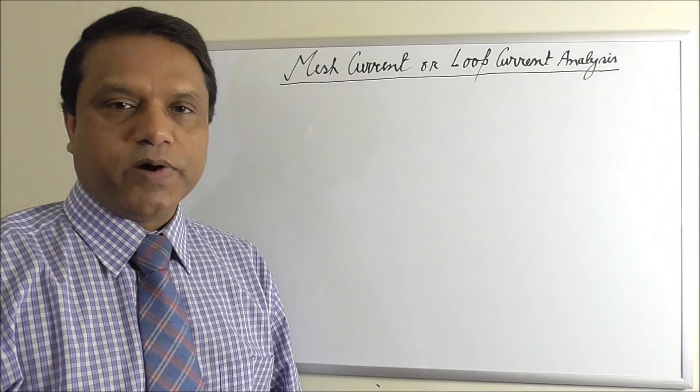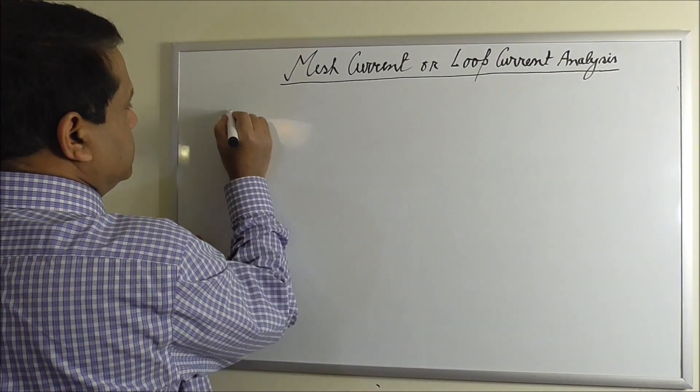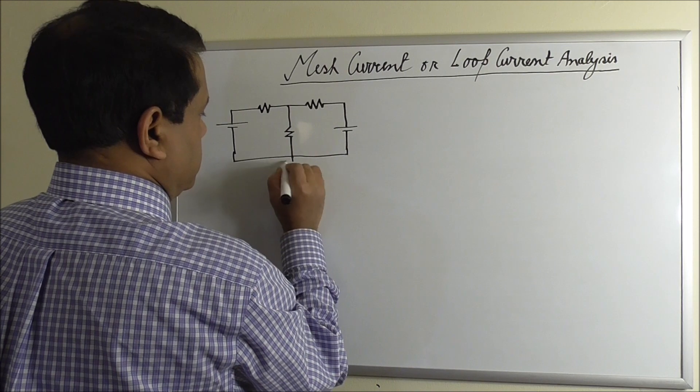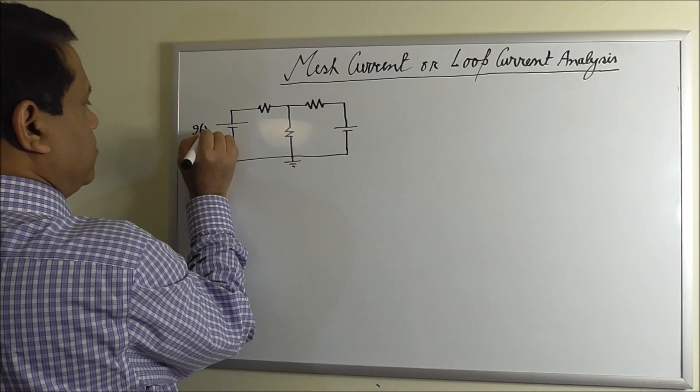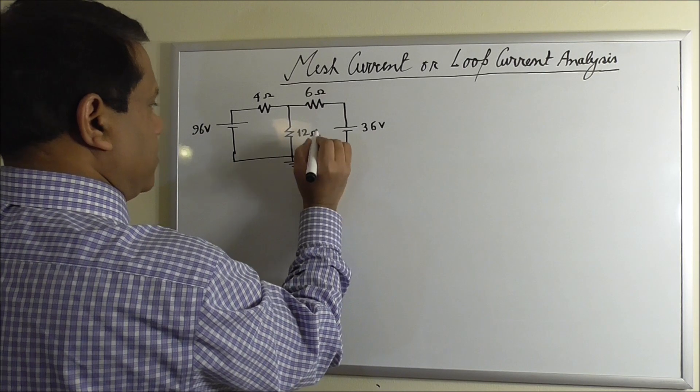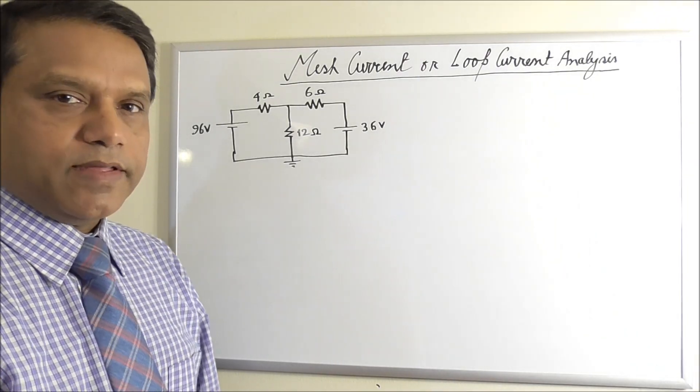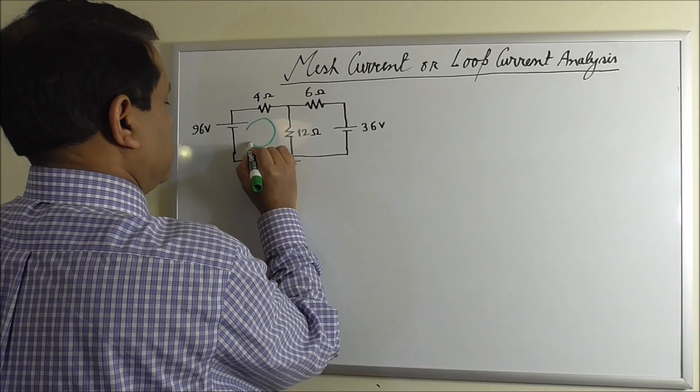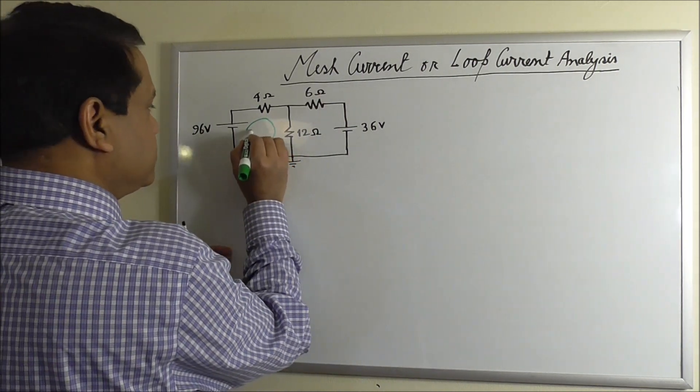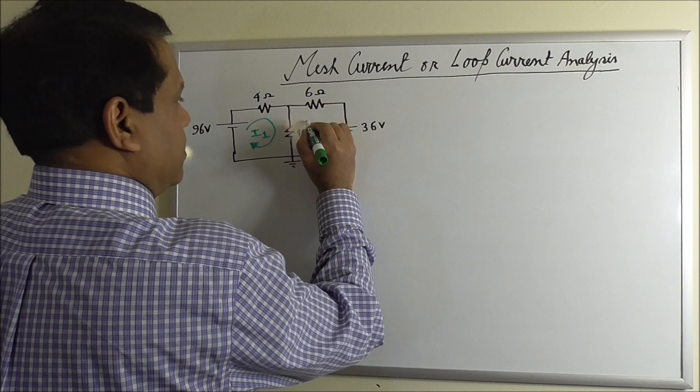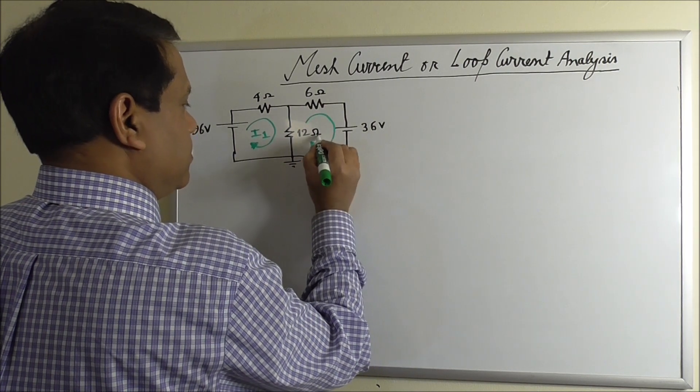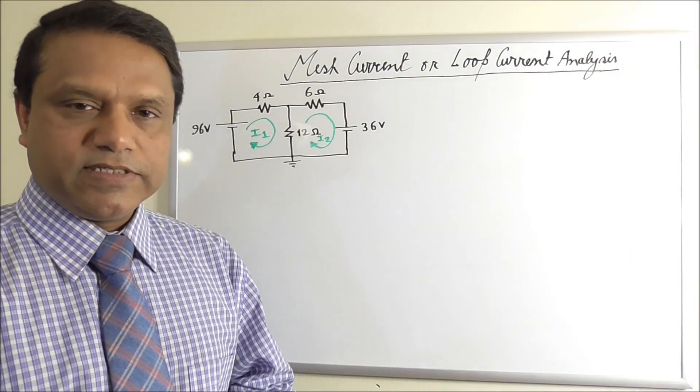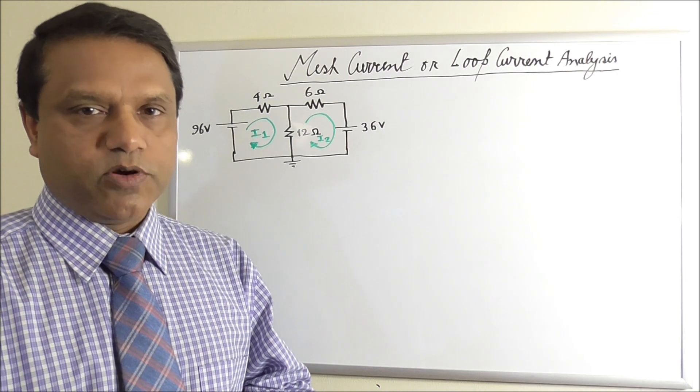Mesh current or loop current analysis. In mesh current or loop current method, we assign loop currents, not branch currents. So let's assign a loop current. Let's call this I1. Let's assign another loop current. Let's call this I2.